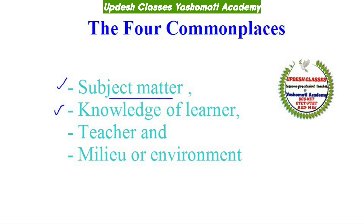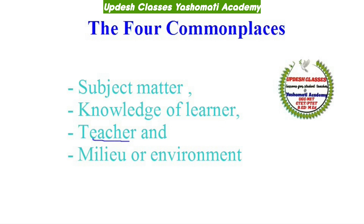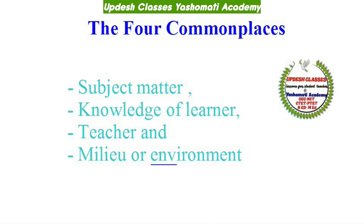Subject matter is related to whatever the content is — जो भी discipline आप पढ़ा रहे हैं उसका curriculum material और उस system का thought process। दूसरी चीज़ knowledge of learner है — learner की previous capabilities, developmental abilities, और unique qualities के बारे में अध्यापक को familiar होना ज़रूरी है। Teacher को अपनी capabilities के बारे में भी जानकारी होनी चाहिए। चौथी चीज़ value या environment है — जो family, community या society का हो सकता है।